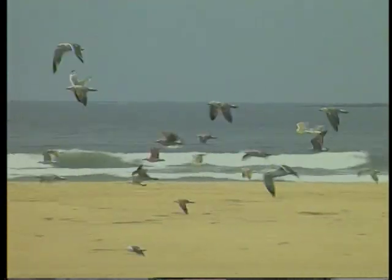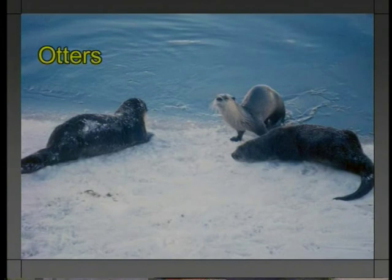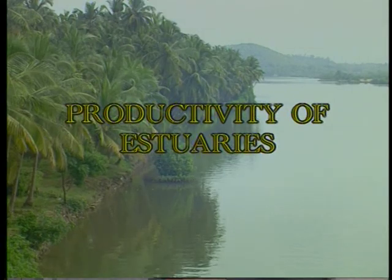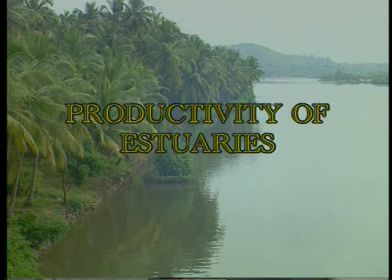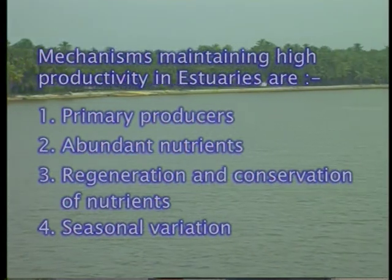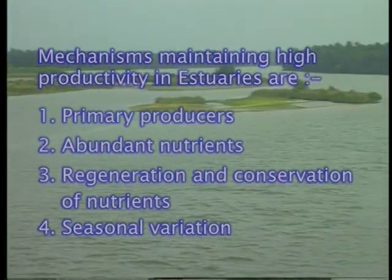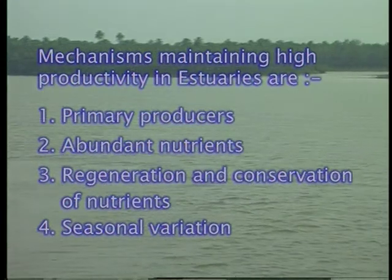Birds consume fishes, while others consume vegetation. The reptiles of estuarine environments include sea turtles, which consume fish, invertebrates and sea grasses. The mammals of estuaries include otters, nutria, dolphins and whales. The mechanisms maintaining high productivity in estuaries are the primary producers, abundant nutrients, regeneration and conservation of nutrients and seasonal variations.